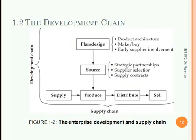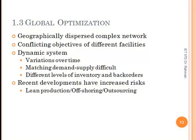This figure shows similar concepts: first comes planning and design, which includes product design and make-or-buy decisions. Then sourcing identifies suppliers based on certain criteria, followed by supply and procurement, production, distribution, and sale. As mentioned, we must treat the entire system as one unit. This system spans the globe, so finding the best solution means finding a globally optimal system — a very challenging problem with several contributing factors.